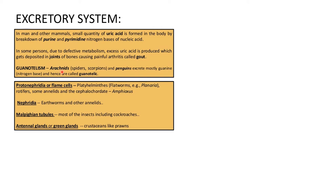Arachnids like spiders and scorpions and penguins excrete mostly guanine as nitrogenous waste and are known as guanoteic. There are also proto-nephridia or flame cells present in Platyhelminthes (flatworms) and some Annelida. Earthworms and other annelids use nephridia as excretory organs. Most insects including cockroaches use Malpighian tubules, and green glands are used by crustaceans.